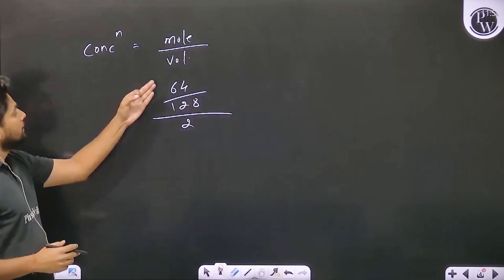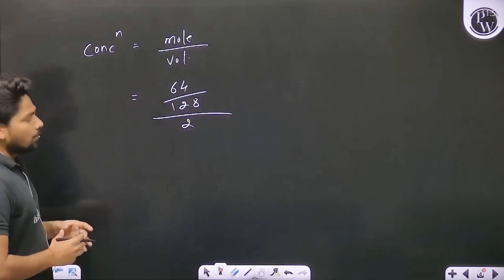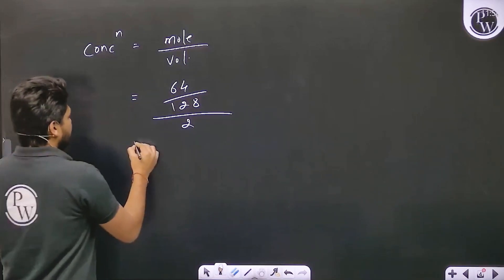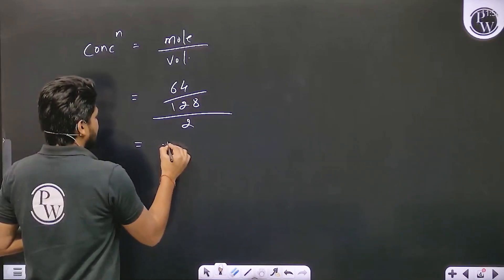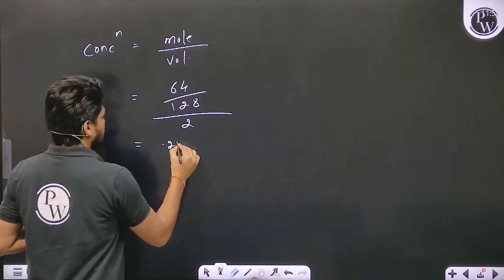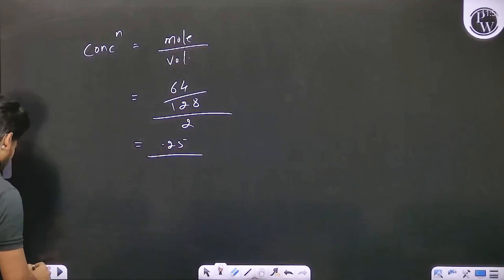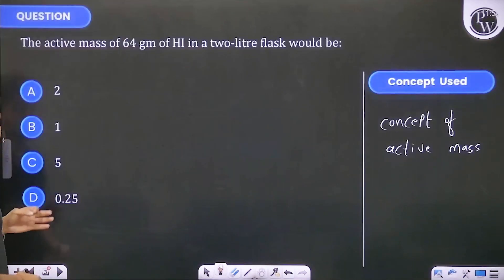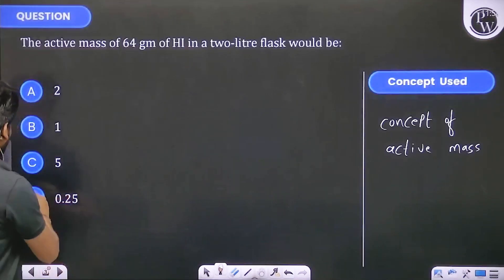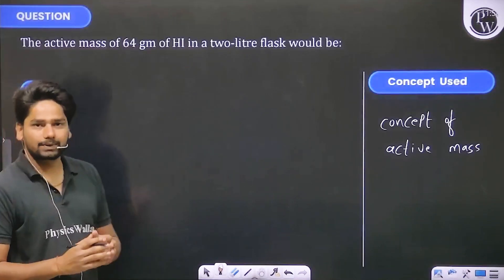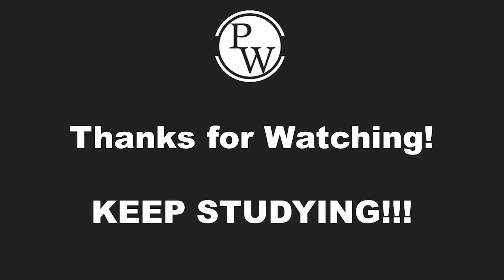0.5 divided by 2 is 0.25. So the correct option is 0.25. Thank you.